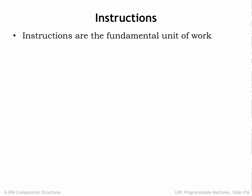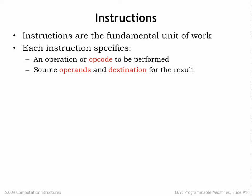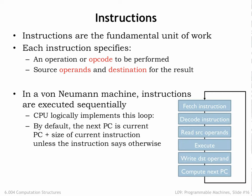Instructions are the fundamental unit of work. They're fetched by the control unit and executed one after another in the order they are fetched. Each instruction specifies the operation to be performed along with a register to supply the source operands and destination register where the result will be stored. In a von Neumann machine, instruction execution involves the steps shown here. The instruction is loaded from the memory location whose address is specified by the program counter. When the requested data is returned by the memory, the instruction fields are converted to the appropriate control signals for the data path, selecting the source operands from the specified registers, directing the ALU to perform the specified operation, and storing the result in the specified destination register. The final step in executing an instruction is updating the value of the program counter to be the address of the next instruction.